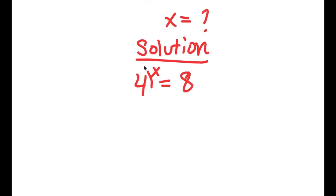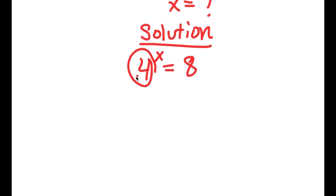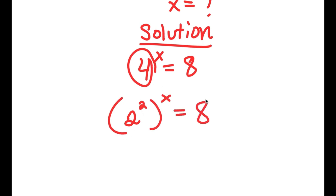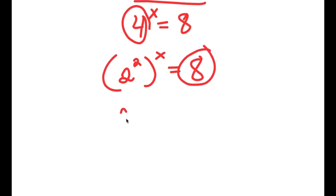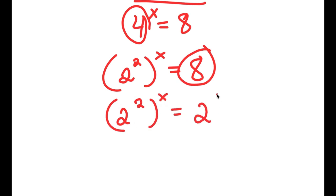Now 4 here is the same thing as 2 squared. So I'm going to rewrite this as 2 squared to the power of x — all I did was replace 4 with 2 squared. And now 8 is the same thing as 2 to the power of 3, so I'm going to replace 8 with 2 to the power of 3. So I have 2 squared to the power of x is equal to 2 to the power of 3.